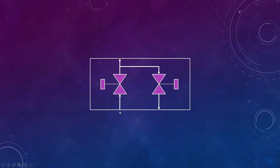There is connection 1, connection 2, and connection 3. Connection 1 is the process connection, which will be connected to the process so that the process medium will enter into this valve. Connection 2 is the instrument connection, where the field instrument — for example a pressure transmitter, pressure switch, or pressure gauge — will be connected.